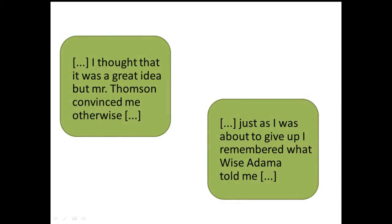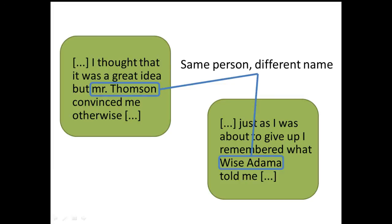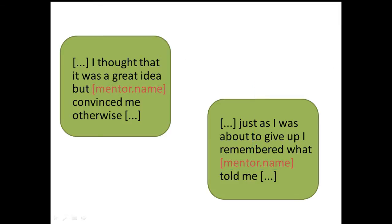The base stories can have conflicting information. For instance, the Minter could have different names in each base story, which would mean he would change his name throughout the generated story. To avoid this, we implemented a variable system, where the name is replaced by the variable Minter.Name. This name is then generated at the beginning of the game using a random name generation algorithm.